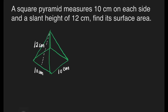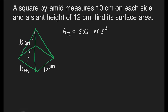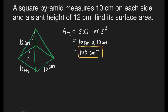Remember that we have one square base, so we have to find the area of the base first. The formula for the area of a square is side times side, or S squared. So that's 10 cm times 10 cm, which gives us 100 cm squared. This is only for the area of our base.